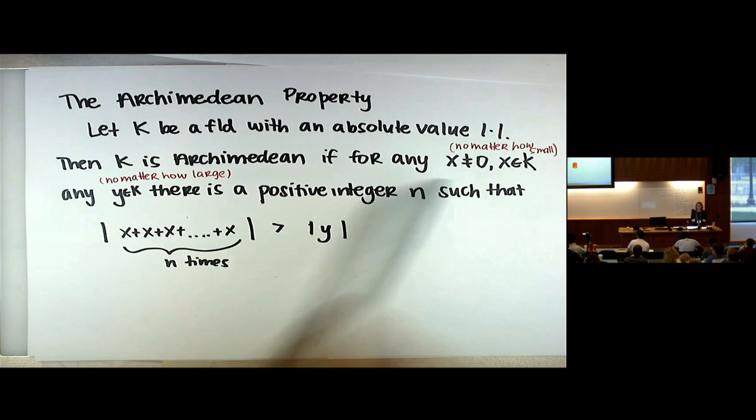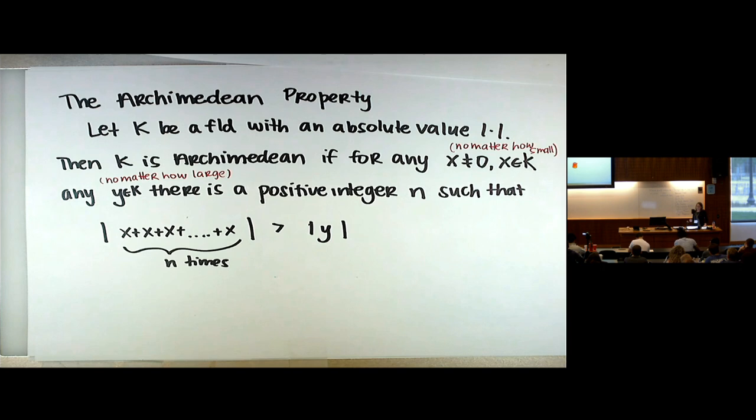Even if you take a tiny X and a really big Y, you can just take that tiny X and add it to itself — maybe a million times, maybe 10 million times — enough times to exceed Y. So the idea is there's no X that's infinitely small (needing infinitely many additions) and no Y that's infinitely large and can't be overtaken.